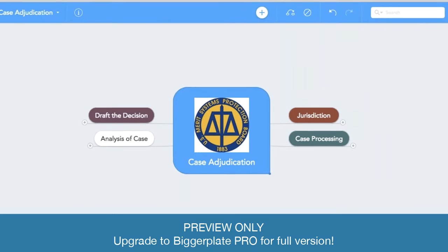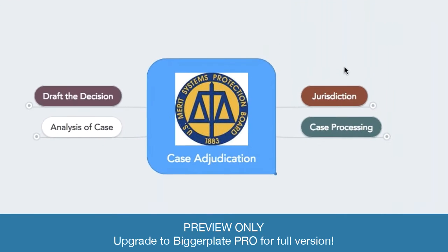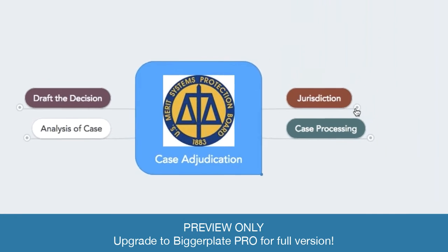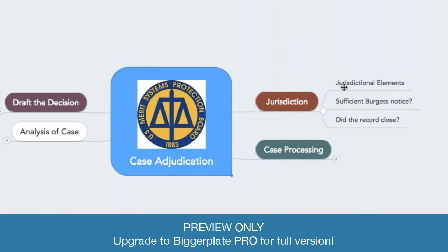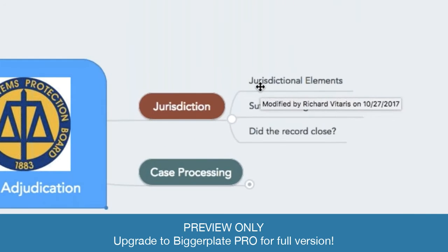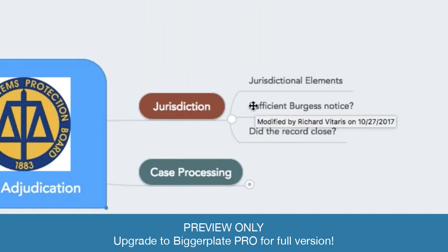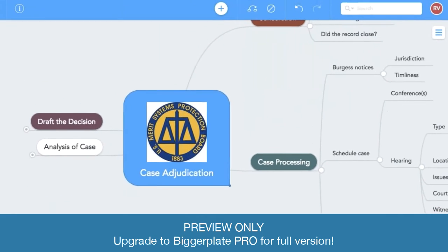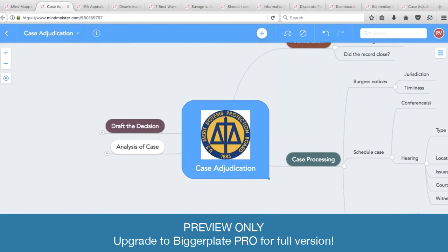In every case that I adjudicate, or a case that an attorney who appears in front of me would have, you need to show that there is jurisdiction over the case. Right now I just ask questions like, what are the jurisdictional elements? In my practice, the judge has to send out a notice telling the parties about the jurisdictional issues, which we call a Burgess Notice, and the judge needs to make sure the record is closed before he or she rules. So right now these are just blank, but in a real case I would plug in what the jurisdictional elements are, what the Burgess Notice is, and when the record closes.